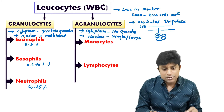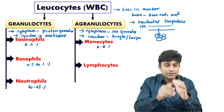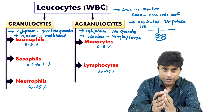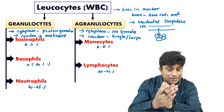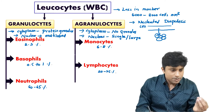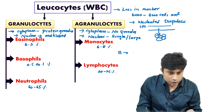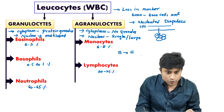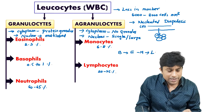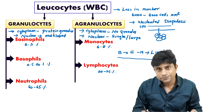Monocytes account for 6 to 8 percent, and lymphocytes account for 20 to 25 percent. In increasing order of abundance: basophils are least, then eosinophils at 2 to 3 percent, then monocytes at 6 to 8 percent, then lymphocytes at 20 to 25 percent, and neutrophils are the most numerous WBC.